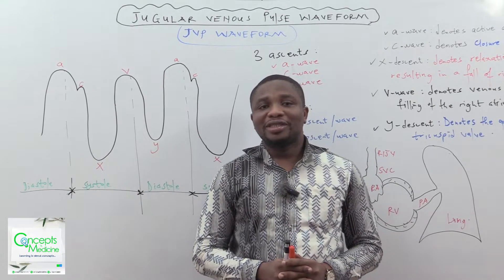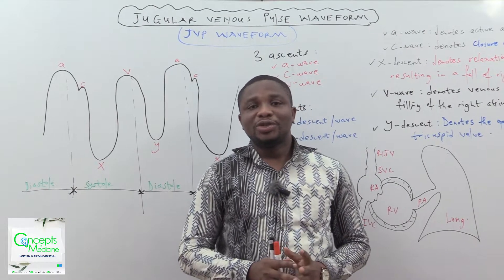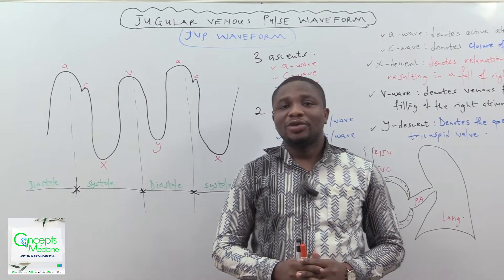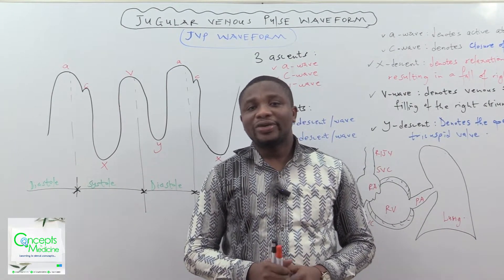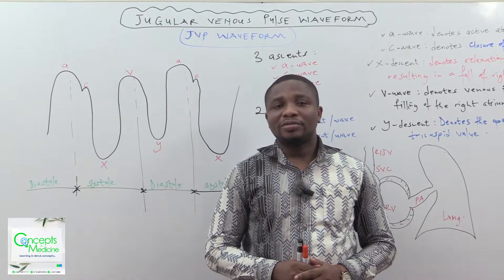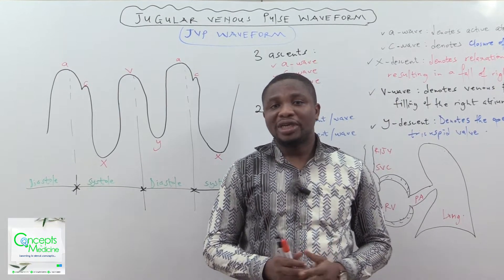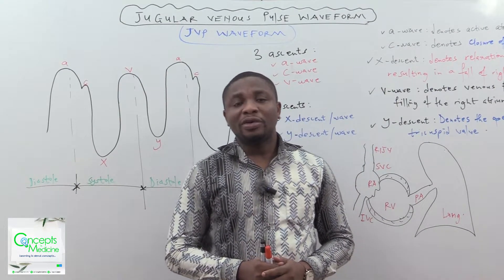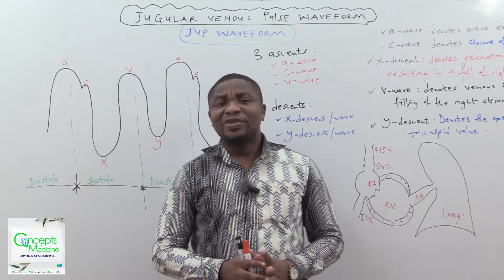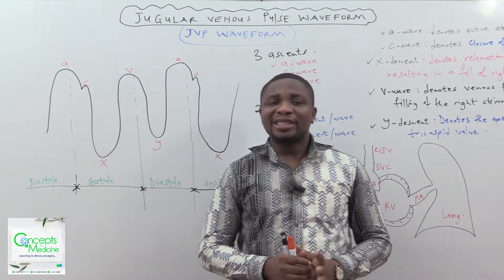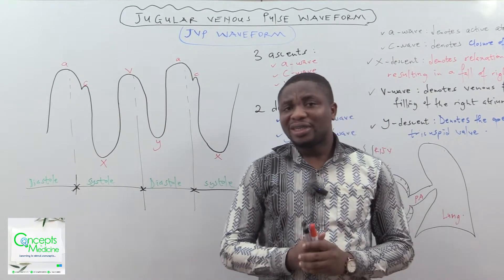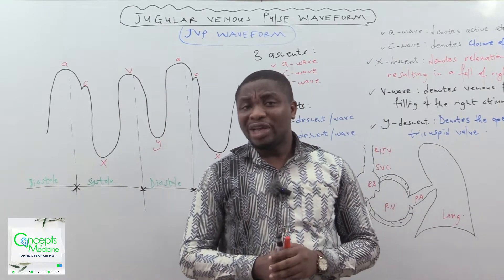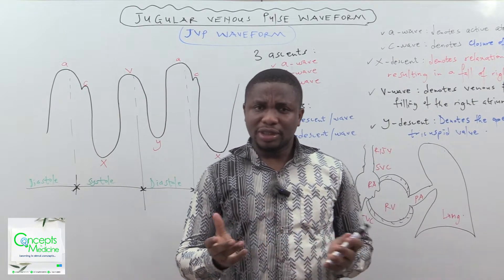Welcome to Concept in Medicine. In today's session, we are going to be looking at the jugular venous pulse waveform, or simply known as the JVP waveform, also referred to as the Wigger's diagram. First of all, we want to understand what jugular venous pulse is.